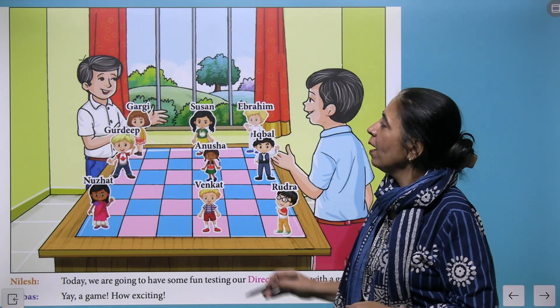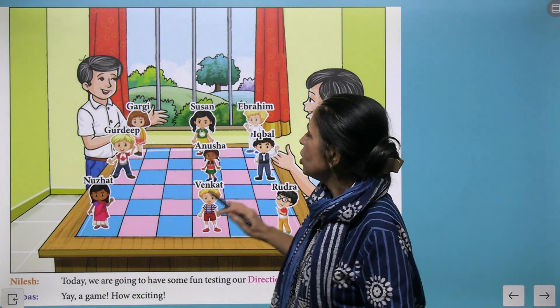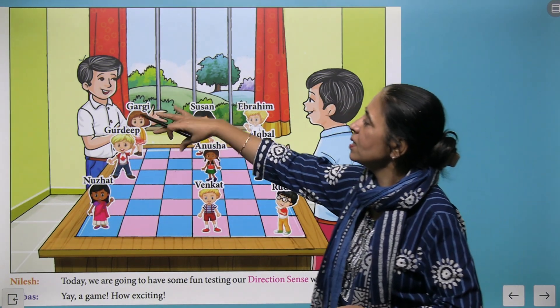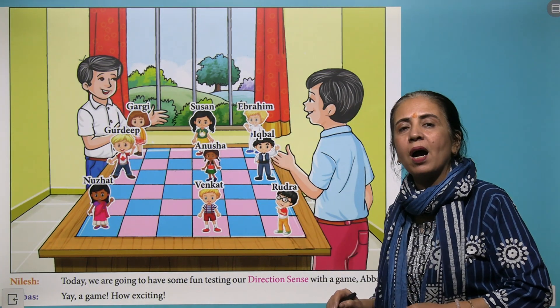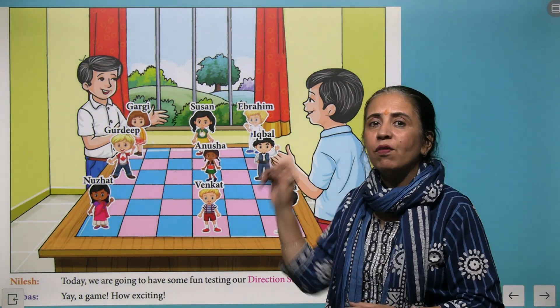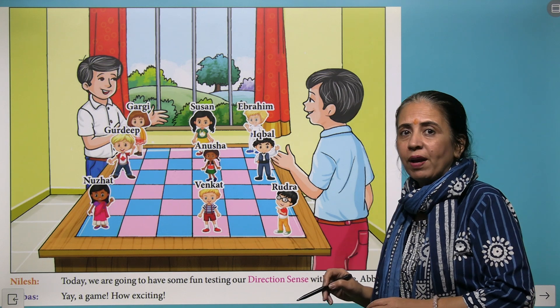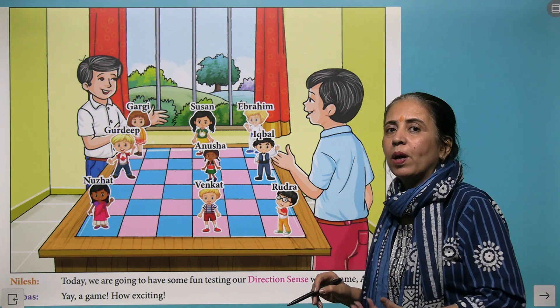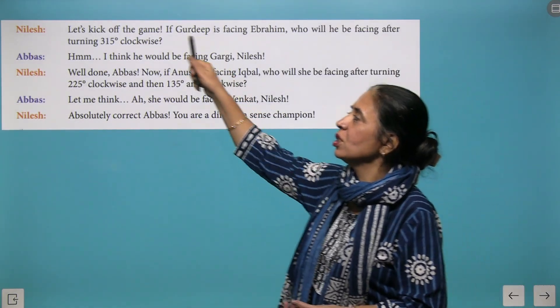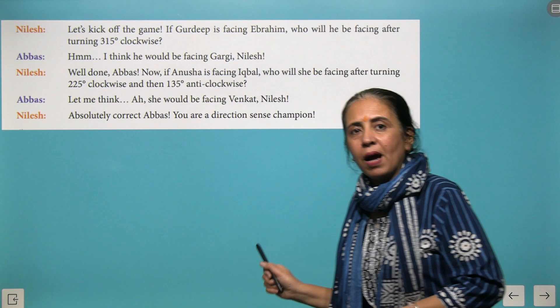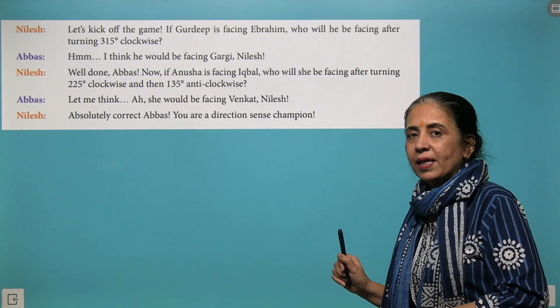Now we have a very interesting game which Nilesh is playing. He is turning the faces of Gurpreet and Anusha, asking if we give a turn of 225 degrees clockwise, where will the particular toy face? Very interesting quiz which Nilesh is asking and Abbas is giving the right answer.